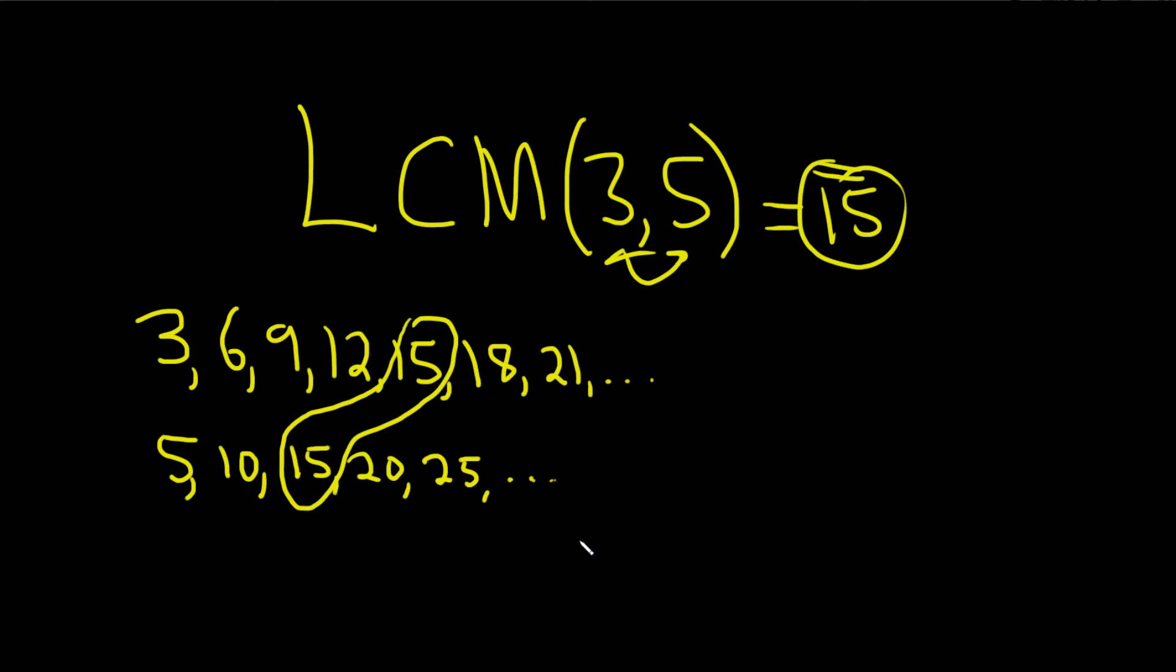So to find the least common multiple, in theory, what you could always do is just write down all the multiples and then take the smallest common one. And this strategy is really only good for smaller numbers like this.